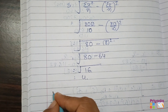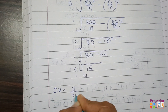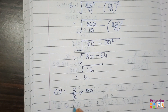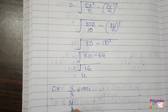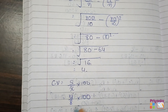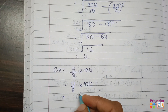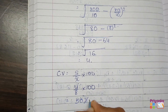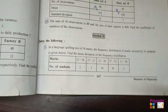Now find coefficient of variation: s divided by mean multiplied by 100, that is 4 divided by 8 multiplied by 100, giving the answer 50%. Here we complete Section D and move to the next Section E.